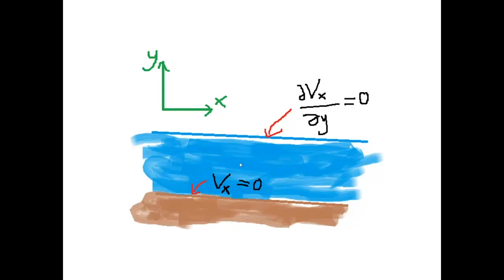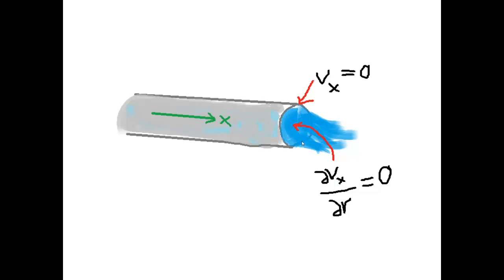The velocity of the river reaches a maximum towards the top of the river, so we get the condition that dvx over dy equals zero at the top. For the pipe problem, using the same argument, the velocity at the rim of the pipe is zero. And at the center of the pipe, dvx over dr equals zero, where r is the distance from the center of the pipe to the point we are looking at.